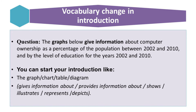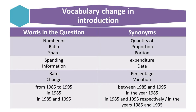Let's look at more words common in task one questions that you can replace with synonyms to write a good introduction. For example, 'number of' can be replaced with 'quantity of'; 'ratio' can be replaced with 'proportion'; 'share' can be replaced with 'portion.' If you are talking about spending, you can replace it with 'expenditure'; 'information' can be replaced with 'data.' Instead of 'rate' you can write 'percentage,' and instead of 'change' you can use 'variation.'